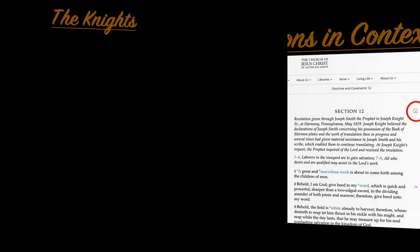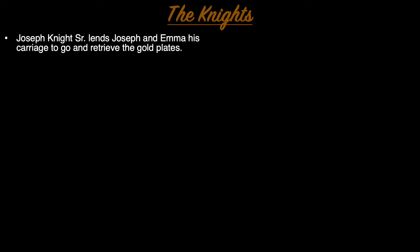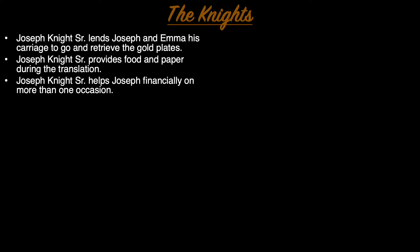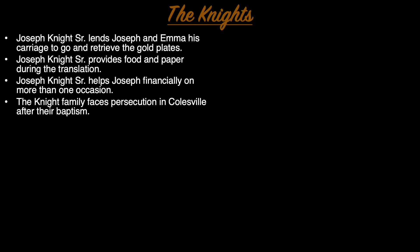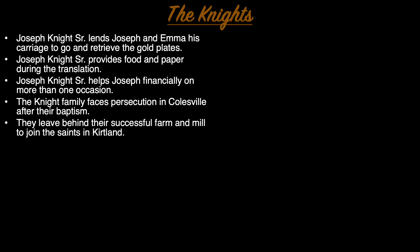They remained faithful all the way from Palmyra to Salt Lake. Joseph first meets the Knights while working for Josiah Stoal, a business partner with Joseph Knight Senior. When Joseph and Emma go to retrieve the plates for the very first time, it's in Joseph Knight's carriage. During the translation of the Book of Mormon, Joseph Knight Senior provided food and paper so that the work could continue, and gave money to Joseph more than once.